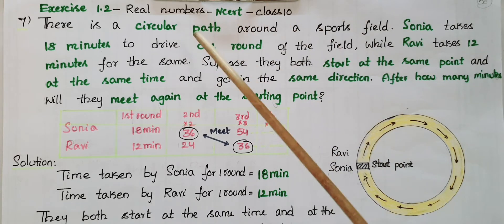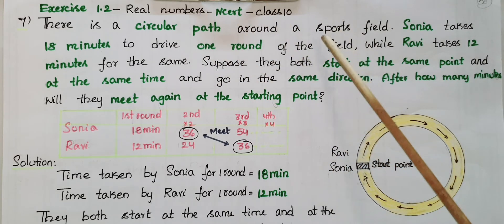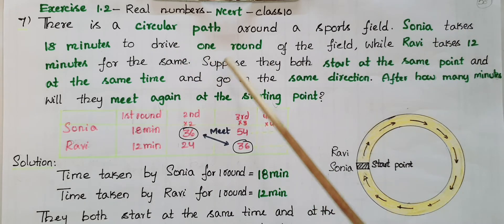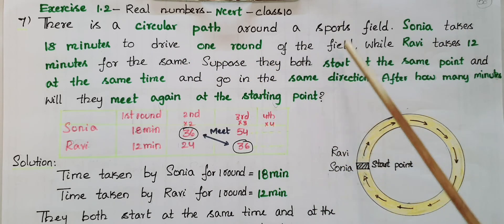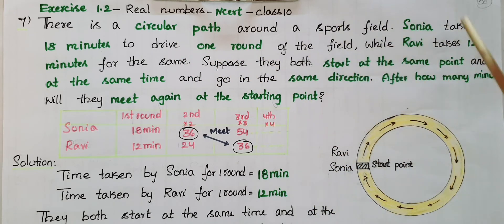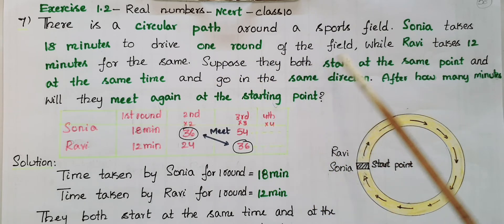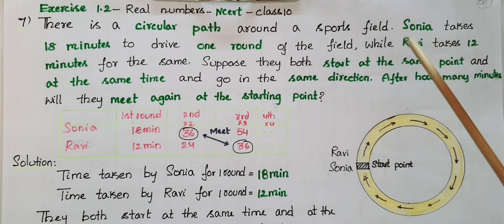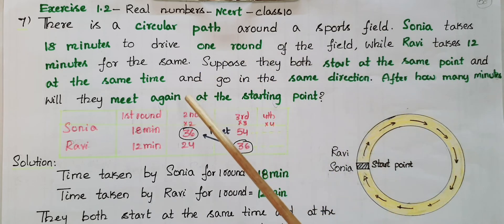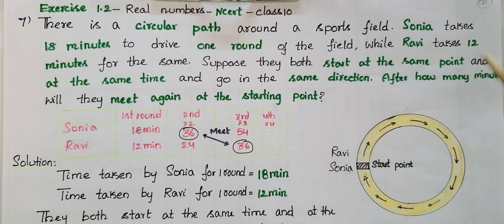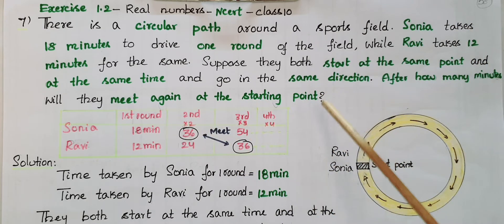There is a circular path around a sports field. Sonia takes 18 minutes to drive one round of the field while Ravi takes 12 minutes for the same. Suppose they both start at the same point and at the same time and go in the same direction. After how many minutes will they meet again at the starting point?